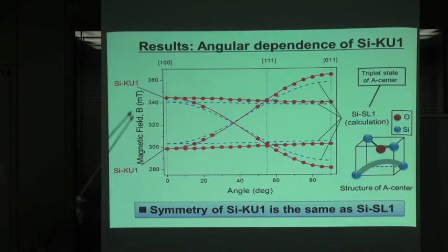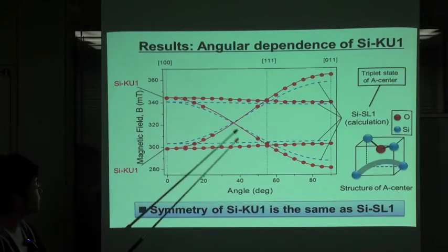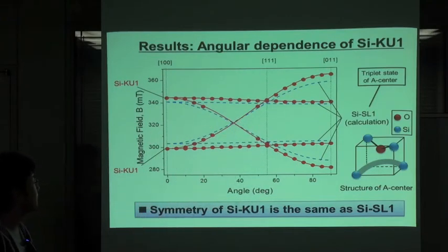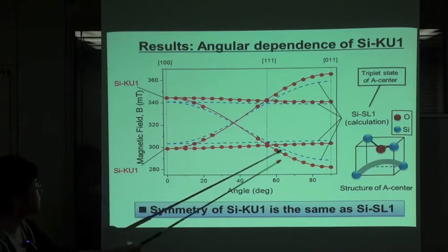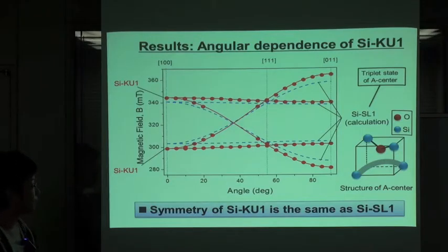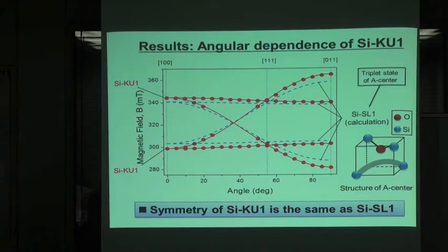This figure shows the result. The horizontal axis is the angle between the sample and the magnetic field. The vertical axis is the magnetic field. The red dotted line is the resonance point of KU1. The blue dotted line is the calculation value of SI-SL1. From this result, we conclude that the symmetry of SI-KU1 is the same as SI-SL1, which is the excited triplet state of A center.